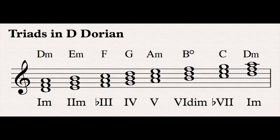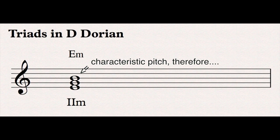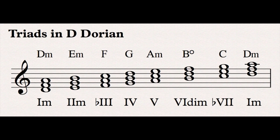In the mode of D Dorian, E minor has the characteristic pitch of B — which is the natural six in the key of D — so it is a characteristic chord to D Dorian. However, F major, the flat three chord in D Dorian, does not have that characteristic pitch of B, and so is not a characteristic chord, so it doesn't really encompass the D Dorianness of D Dorian.